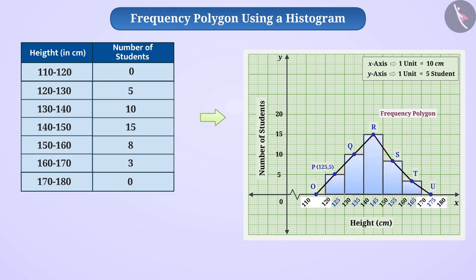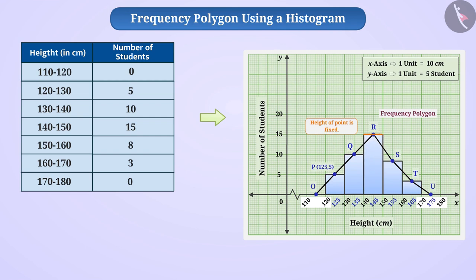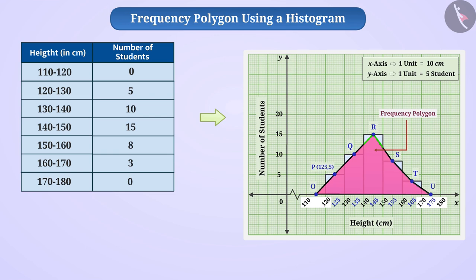Data is represented in the histogram as rectangles, while data in a frequency polygon is represented using a line graph. In the context of the histogram, we can say that the height of different points of a class interval is fixed, which shows that a class interval in the histogram has uniform distribution of frequencies. In a frequency polygon, the height of different points in a class interval is not fixed, meaning frequency polygons do not have uniform distribution of frequencies. With the help of frequency polygons, we can find an increase or decrease in frequency — that is, the trend.